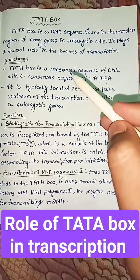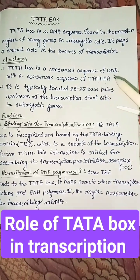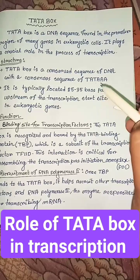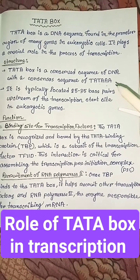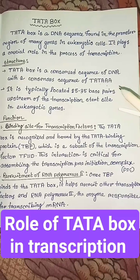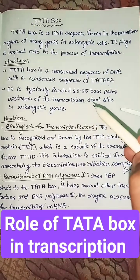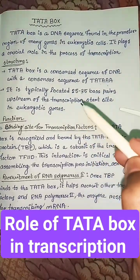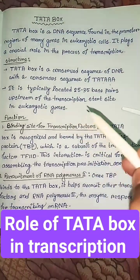Structure. TataBox is a conserved sequence of DNA with a consensus sequence of TAAA. This sequence is rich in adenine and thymine residues, and is typically located 25 to 35 base pairs upstream of the transcription start site in eukaryotic genes.